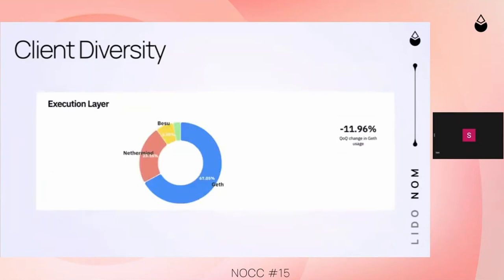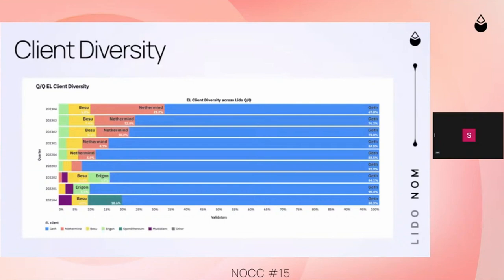Moving on to execution layer. As of Q4 2023, the curated set is running on 67% Geth, which is actually almost a 12% drop compared to the previous quarter. That 67% is the latest update in a trend that has been going on since the merge, where Geth was found to be much more stable than alternative clients, but has slowly been replaced by other clients — mainly NetherMind, which did a big update last summer and is showing it can be relied upon almost as well as Geth currently.